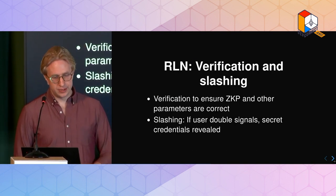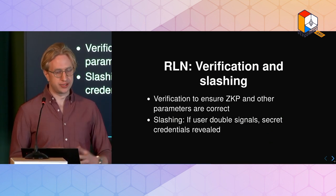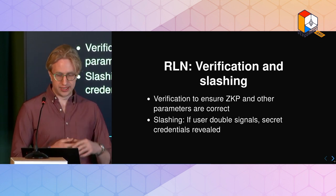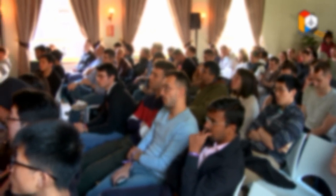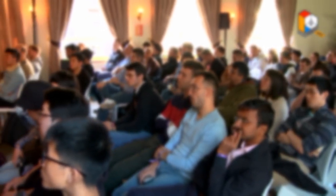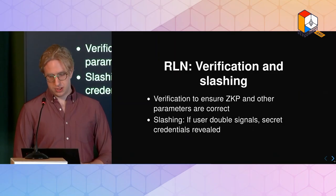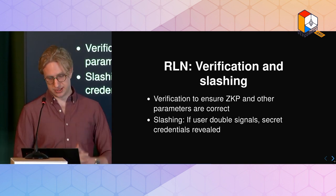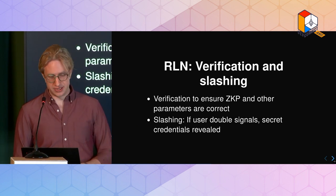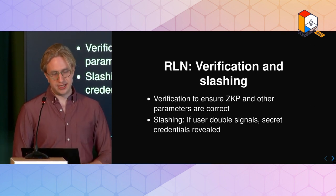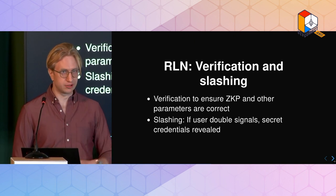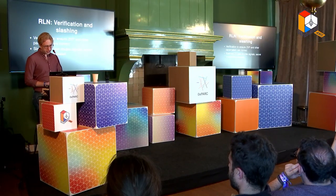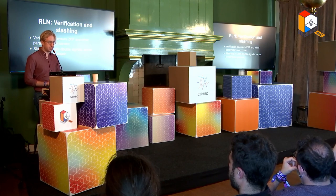Verification and slashing: the verification ensures that the signal's proof and some other parameters are correct. You need to make sure the external nullifier is in the correct epoch - so you're not sending messages in the future or past in the case of time-based epochs. You want a non-duplicate check so you're not sending the same message twice. You verify that the zero-knowledge proof checks out. You also check that there's no double signaling - that a user isn't sending more than one message in a given time period. Slashing is based on Shamir's secret sharing.